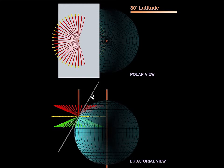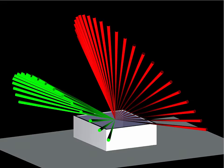What we see of that is what we're able to see above the horizon plane of the earth, represented by this gray plane right here. We can take these sun angles and interpret them relative to architecture.